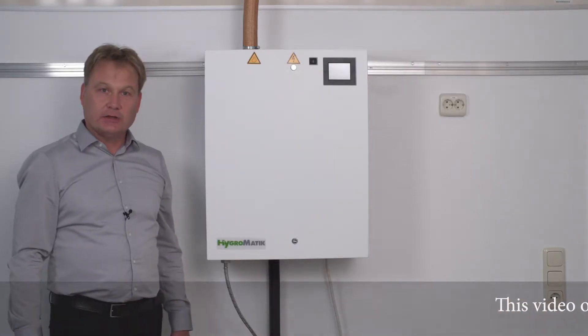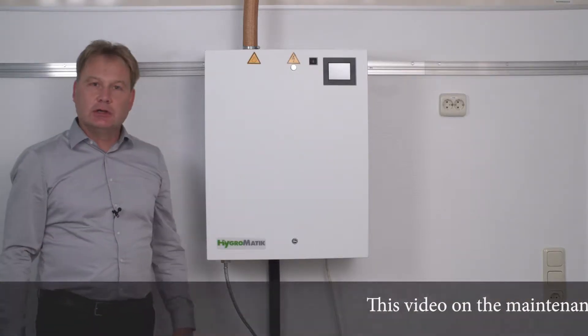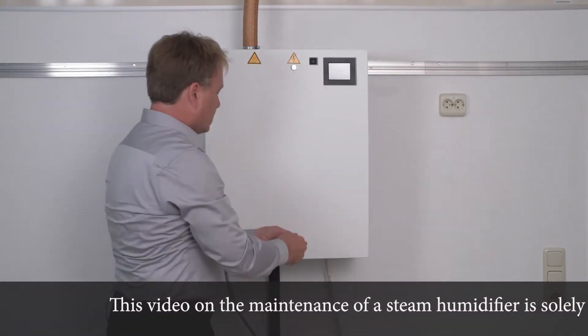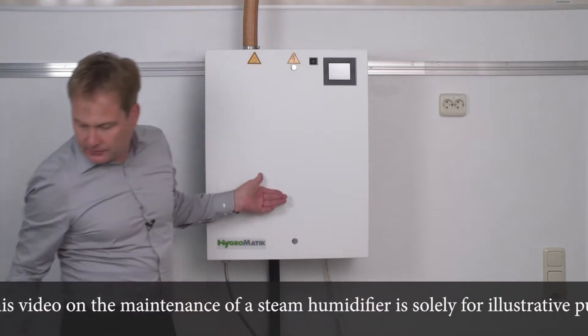After the unit has been cut off from the power and water supply I can safely open the housing cover. To do so I turn the lock bolts 90 degrees to the left and open the unit.